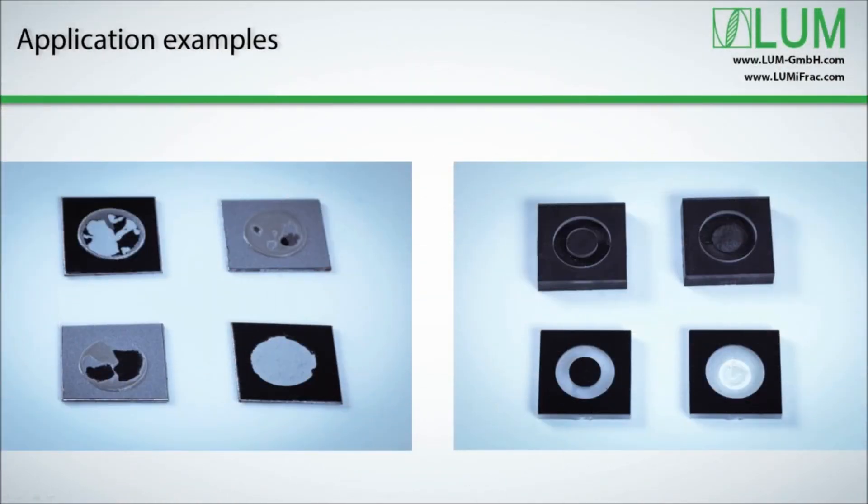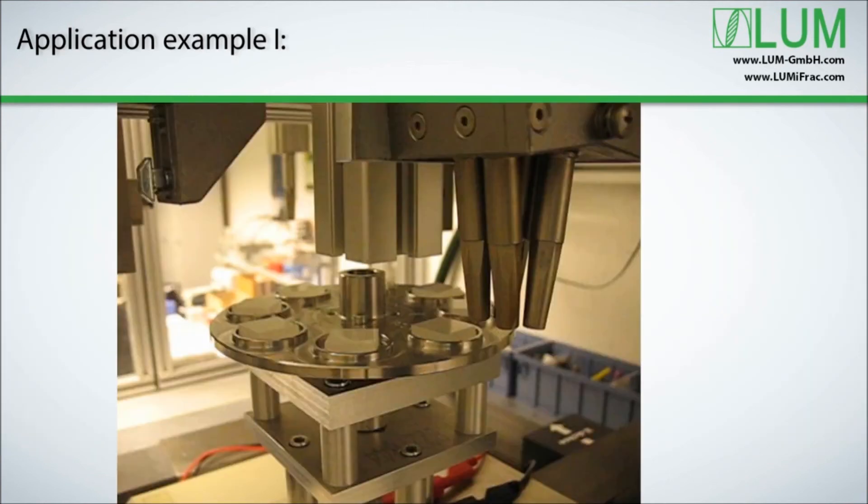Now we move on to a part that you are most interested in, the application examples. There are measurements of different adhesives and composites that our customers did with us in the last three years. Example 1. Polymers like PA-polyamide or PP-polypropylene are characterized by low surface energy. Therefore, joining by adhesive bonding often results in insufficient bond strength. Plasma treatment significantly increases the adhesion properties of the mentioned polymers.